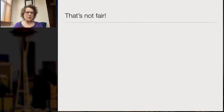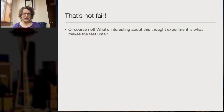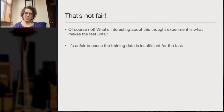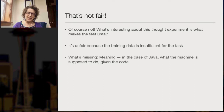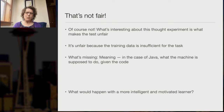Hopefully your reaction was to say, wait a minute, that's not fair. Of course it's not fair. What's interesting is what makes it unfair — the training data is insufficient for the task. What's missing is meaning. In the case of Java, that's what the machine is supposed to do given the code. In the case of natural language, it's the communicative intent of the speaker.